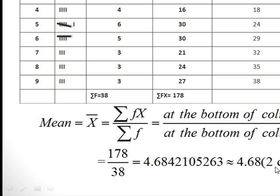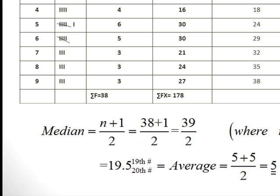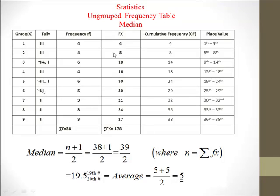To 2 decimal places: after the decimal, the digits are 6 and 8. It remains as 8 because the digit that follows is less than 5. If the next digit were 5 or greater, you would add 1 to the 8, making it 9. So the mean is 4.68. Now for the median.